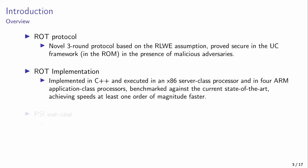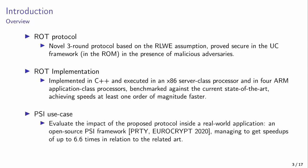Secondly, we implement our novel protocol in C++ and execute it in an Intel x86 server-class processor and in four ARM application-class processors, and benchmark it against current state-of-the-art, achieving speeds at least one order of magnitude faster. Finally, we integrate the protocol in an open-source private set intersection framework, and evaluate the real-world implications of our protocol. Here, we manage to get up to 6.6 times faster executions than when using the related art.